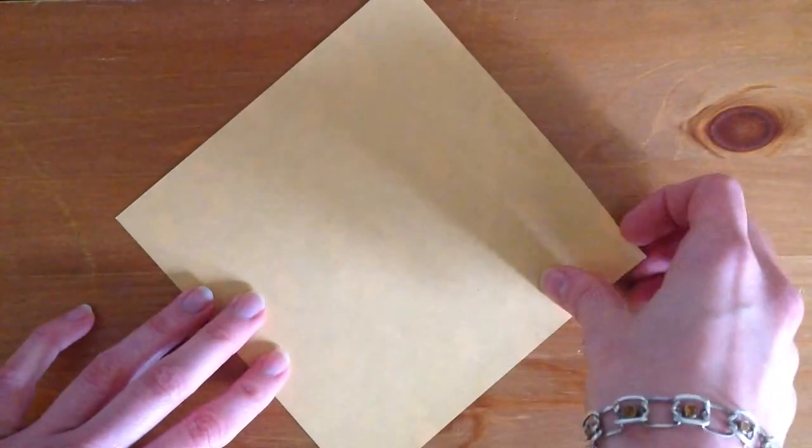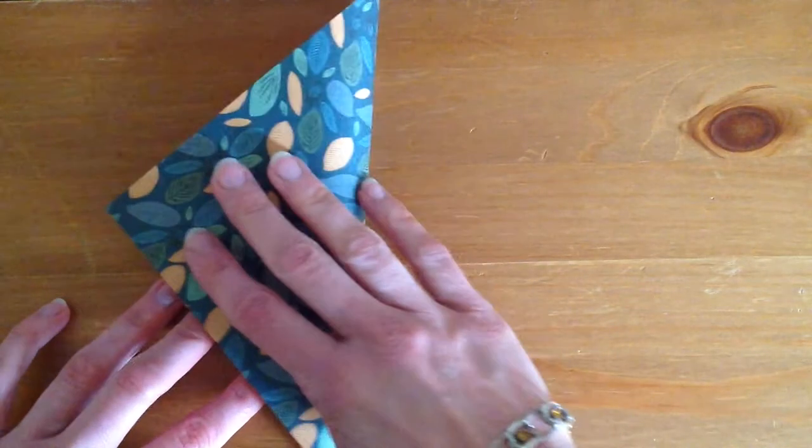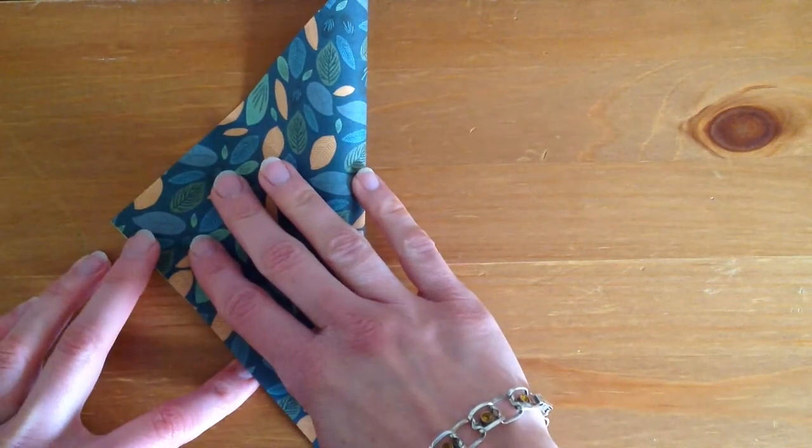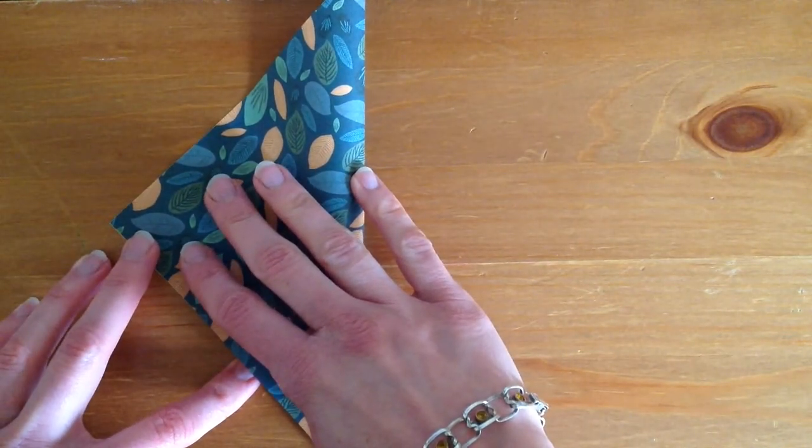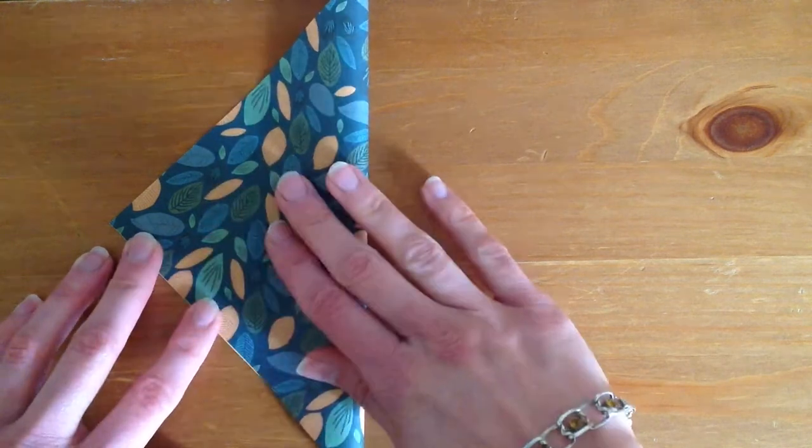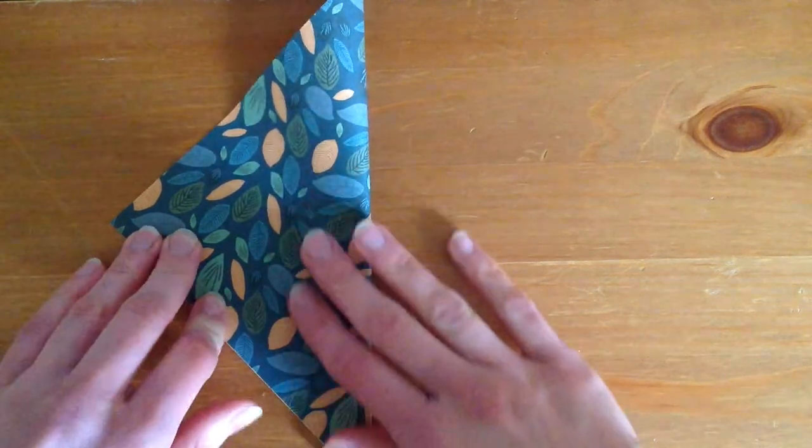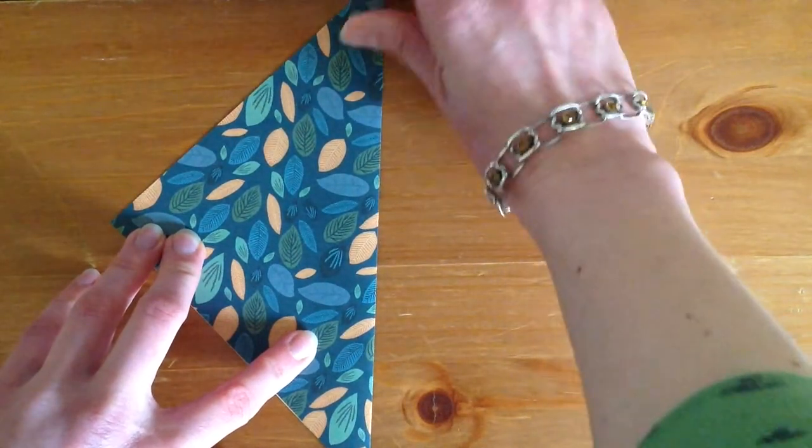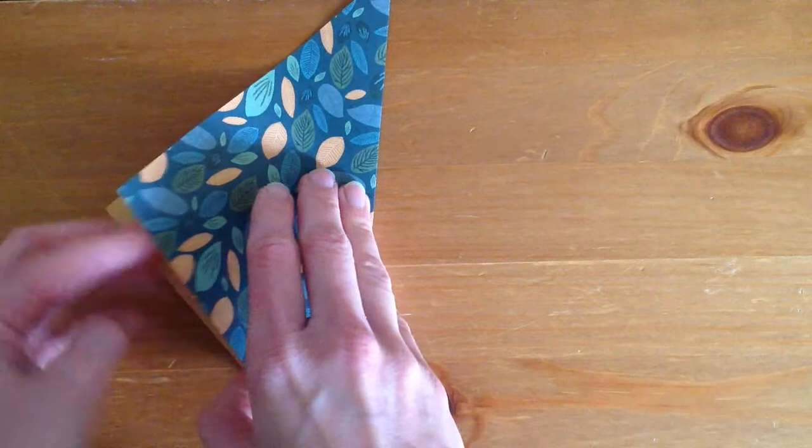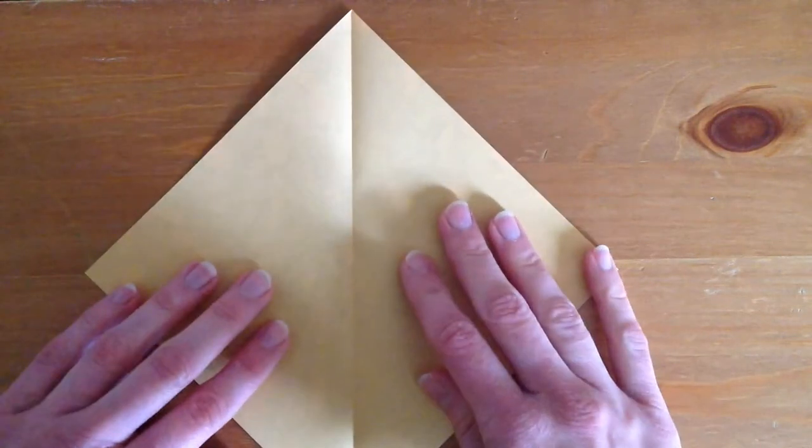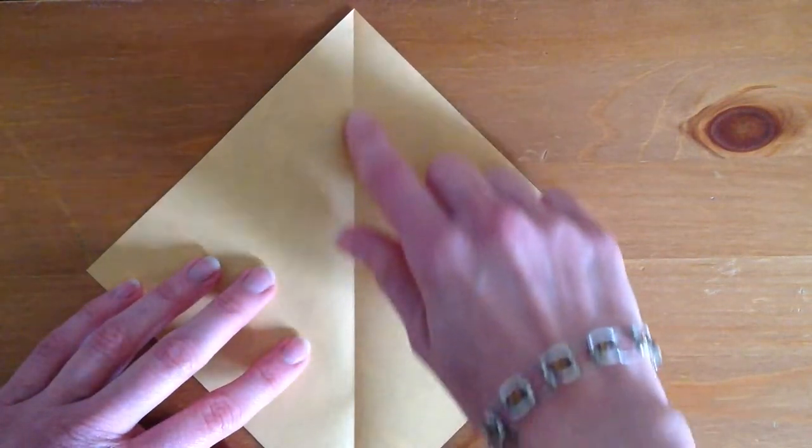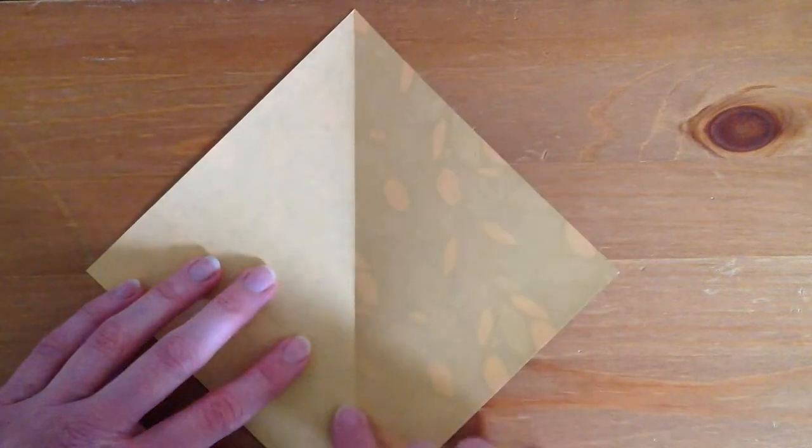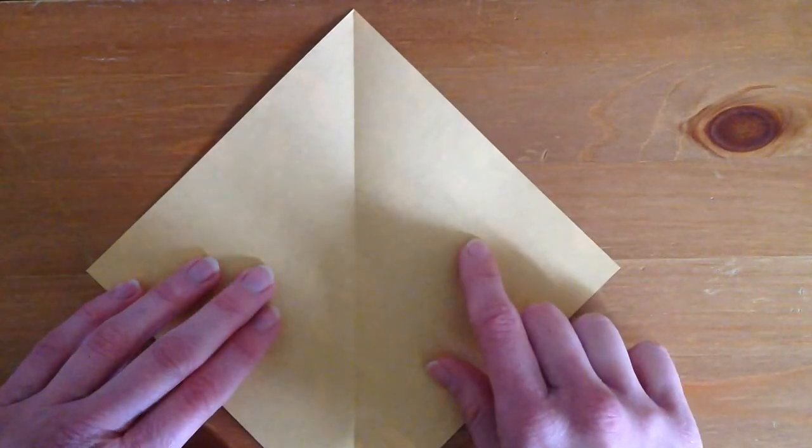We're going to take one corner and fold it right up to the opposite corner like this. And once we've marked the fold, we're going to reopen it. What we want is this line because we're going to use it to place our following folds.